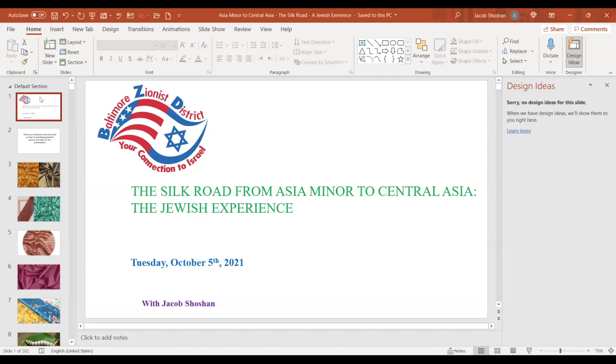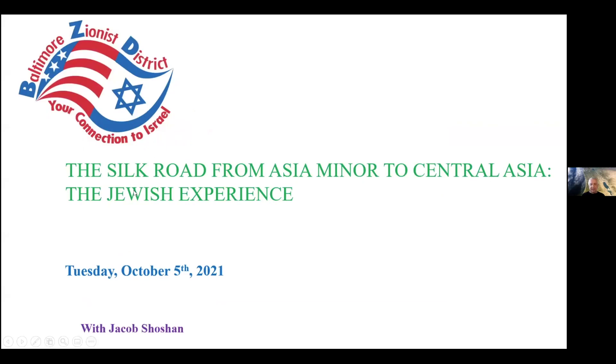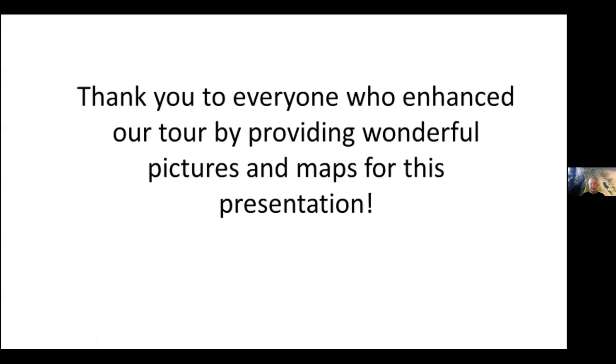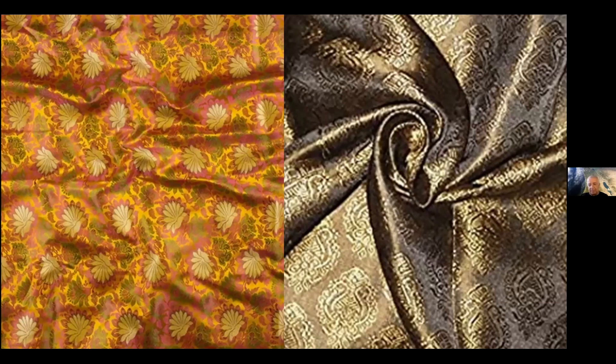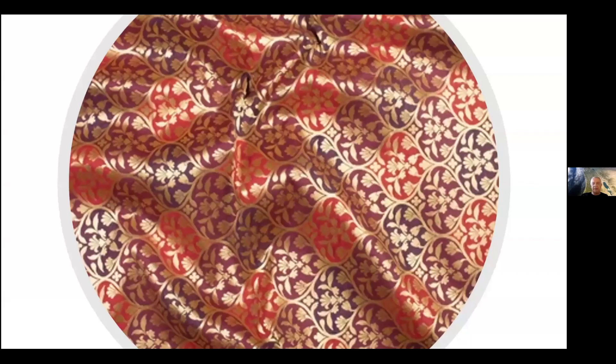Thank you for that introduction. This trip is going to be a bit different. How can you squeeze such a large area and such a long history into these couple of meetings? But we'll try. Silk needs no introduction — everybody knows it comes in different forms: brocade, tapestry, and all kinds of different fabrics that people print and dye in wonderful colors and shades.